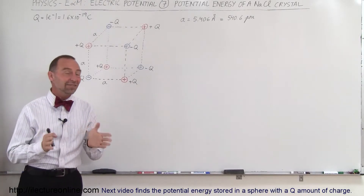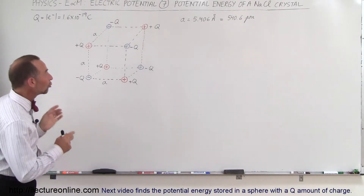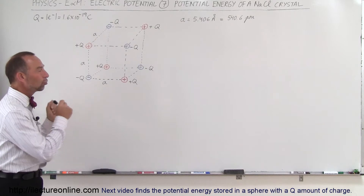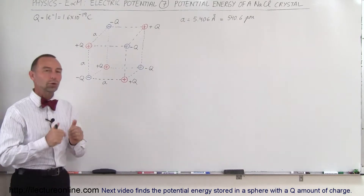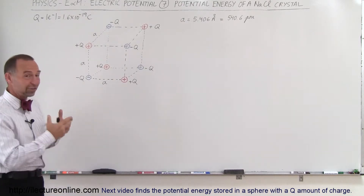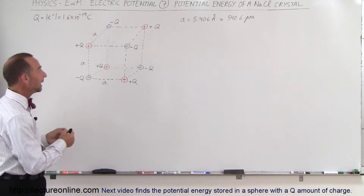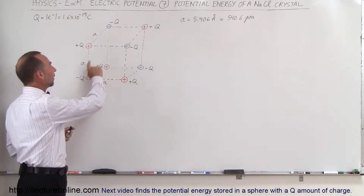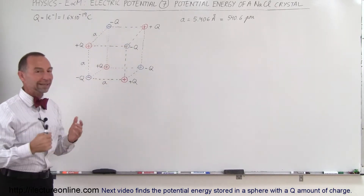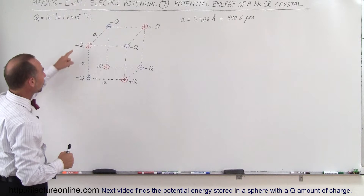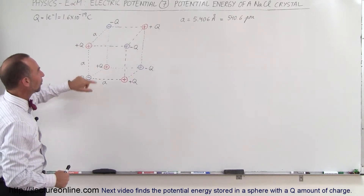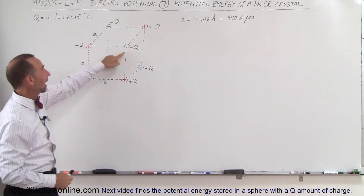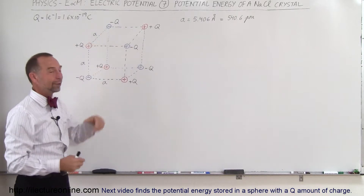Welcome to ElectronLine. In this example, we're going to show you how to find the potential stored in the sodium chloride crystal. Sodium chloride is a salt crystal. It has an ionic crystal so that half of the atoms are negatively charged and the other half are positively charged. The positively charged atoms are sodium, and the negative atoms are chlorine.